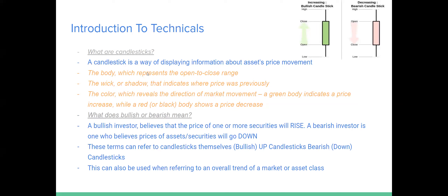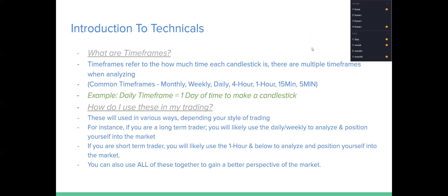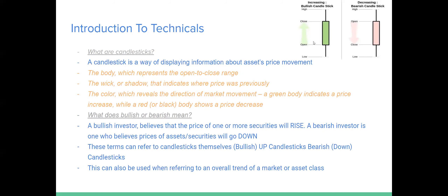So the body represents the open to close range. The wick or shadow indicates where price previously was. The color of the candlesticks reveals the direction of the market movement. A green body indicates a price increase, while a red or black body shows a price decrease. You can customize the candlestick colors on TradingView, but to keep it simple: a green candlestick is price moving up, and a red candlestick is price moving down.